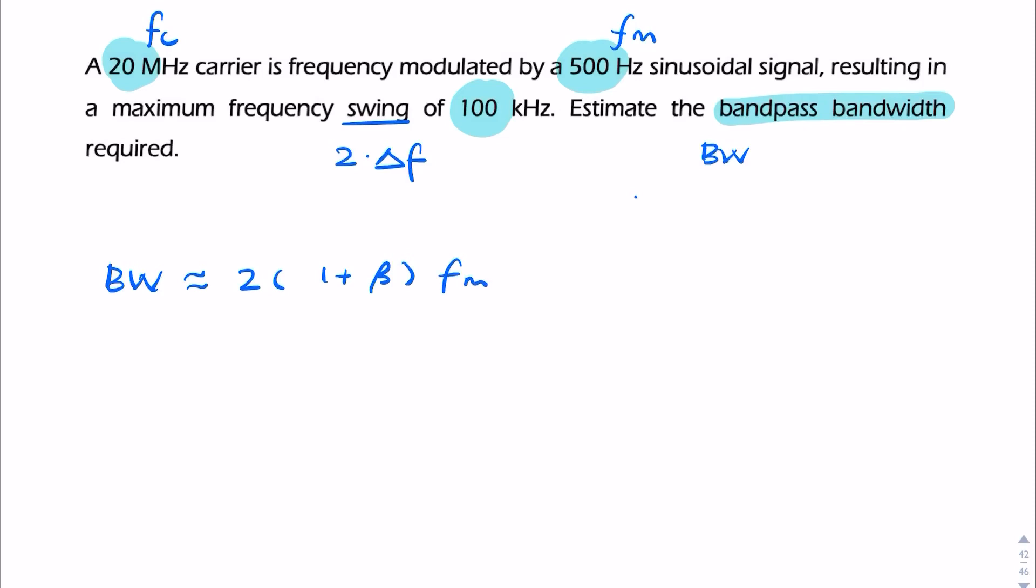Now we can either find beta and then find the bandwidth, and that's possible. Now of these three numbers that we're given, the least important is the carrier frequency. We hardly ever need the carrier frequency.